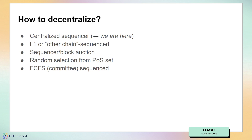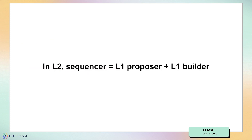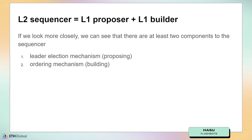First-come-first-serve is where a committee just looks at what transactions the different nodes see first and then comes to some kind of consensus on that. In the layer two right now, what we understand as the term sequencer actually combines the equivalent of a layer one proposer and a layer one builder — especially in the leader election mechanism, which is the proposer part, and the ordering mechanism, which is the building part.